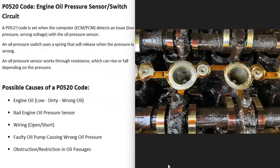Another thing that can throw those sensors off is if the oil passages are blocked and oil can't flow through them correctly, causing low oil pressure. But again, this isn't very common and is fairly rare. Usually when you get a P0520 code, it's either a bad pressure sensor or a wiring problem going to the sensor. Just keep in mind that a bad oil pump or blocked oil passages can also be a cause.